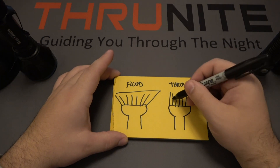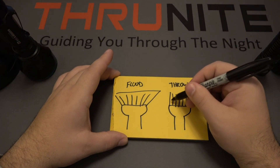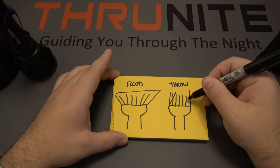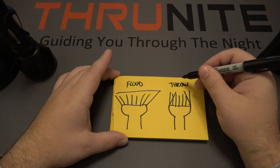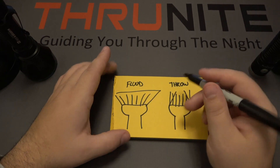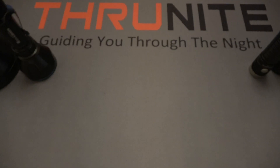With throw, we have a very focused beam — oftentimes this might even be angled — so you have more distance. And again, flood is the opposite.